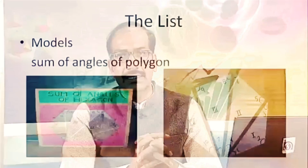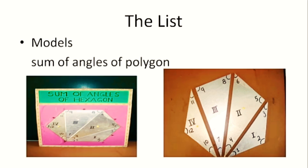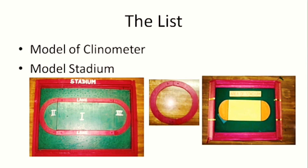Then we can have a model of a hexagon to find the sum of angles of polygons by dividing them into triangles. We can have models of a clinometer and a stadium — the stadium is divided into parts: two semicircles which together make a circle, and the middle part is a rectangle. We find the areas of the circle and rectangle separately to get the area of the stadium. The sum of angles of a triangle is 180°, sum of angles of a quadrilateral is 360°, and the diagonals of a rhombus bisect each other at right angles.